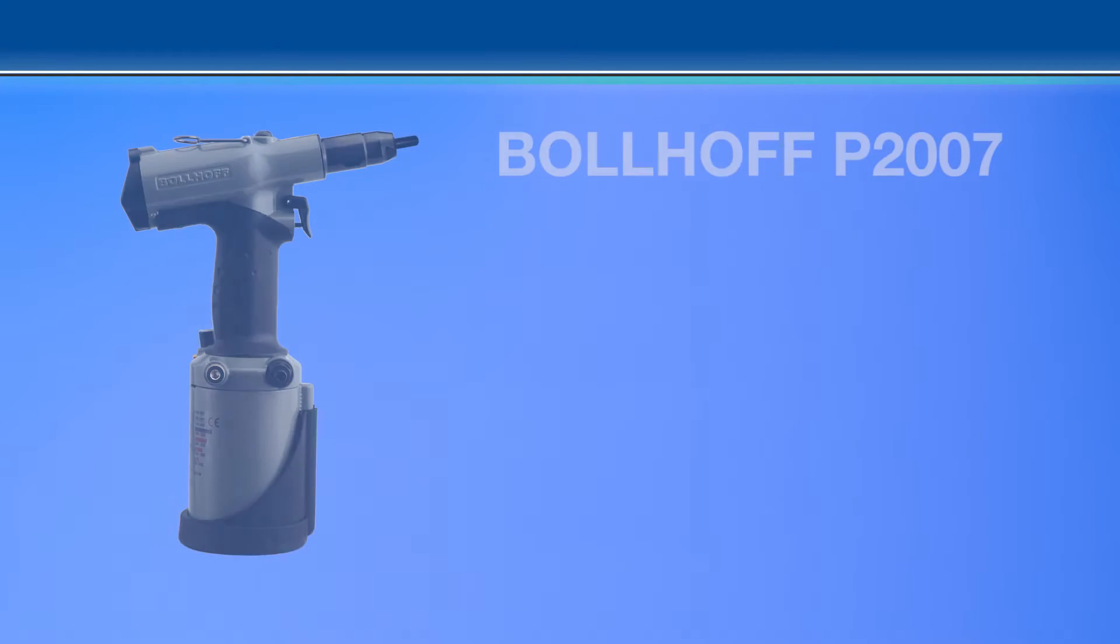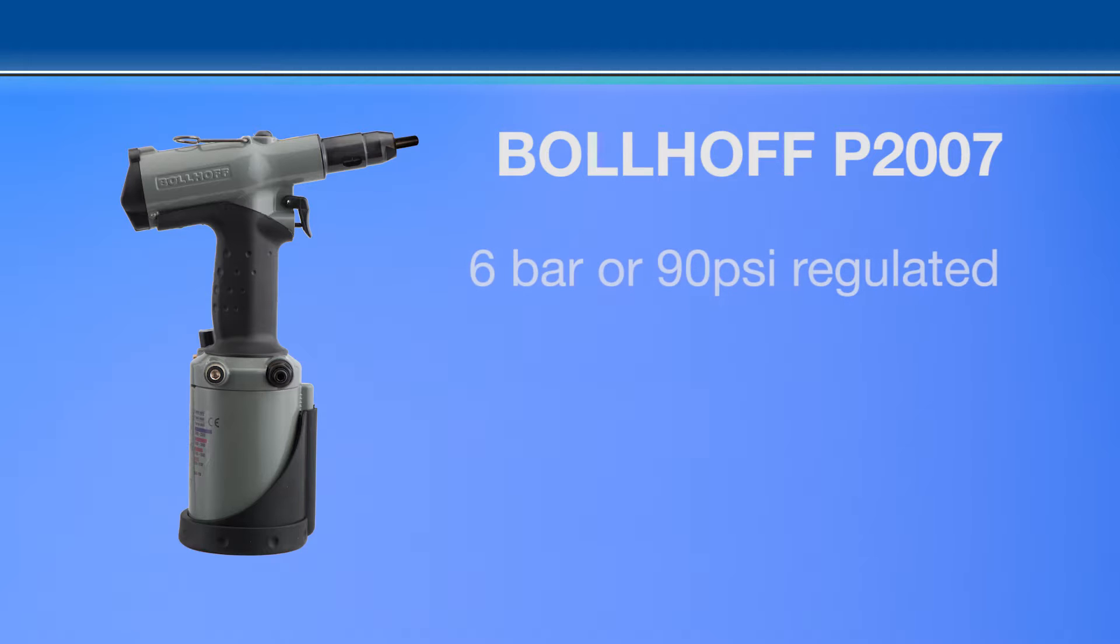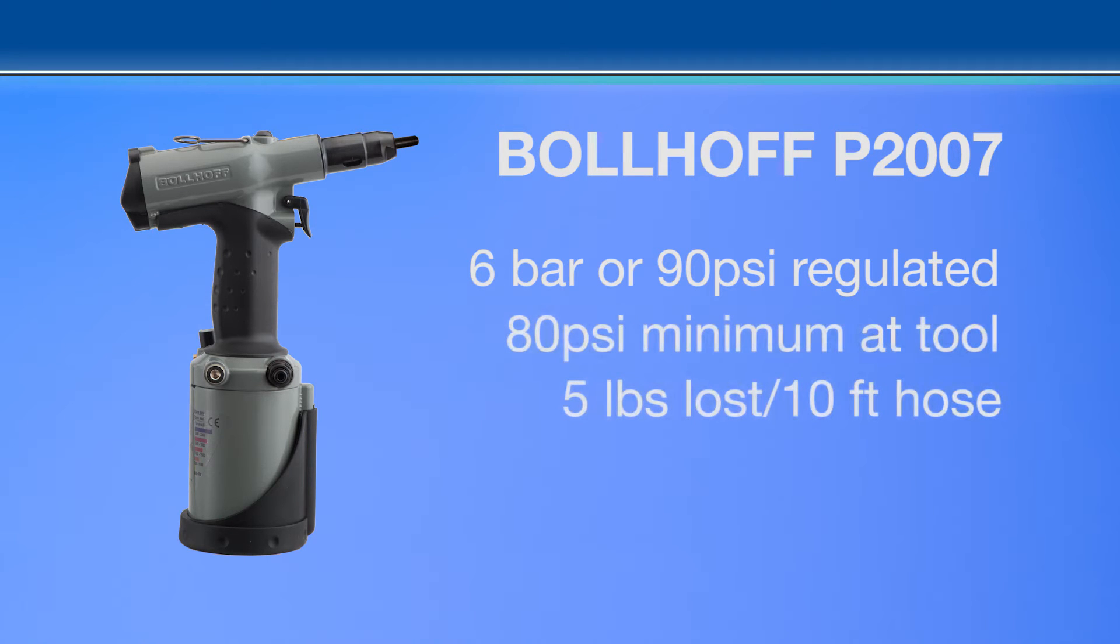The Bolhof P2007 requires 6 bar or 90 psi of regulated air pressure. The tool needs to be at 80 psi minimum at the tool. Please note for every 10 feet of hose you lose an average of 5 pounds without an accumulator tank.